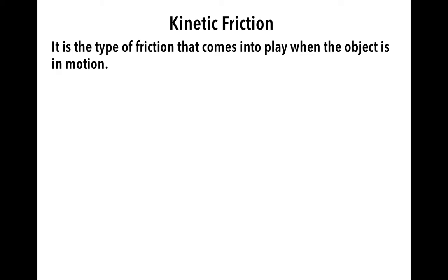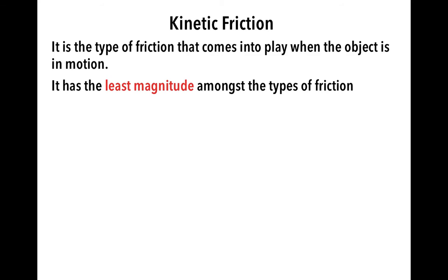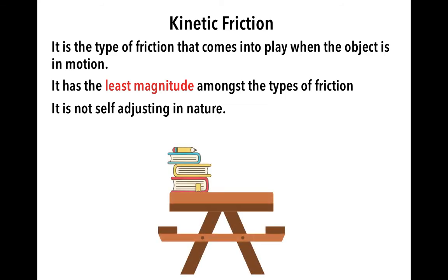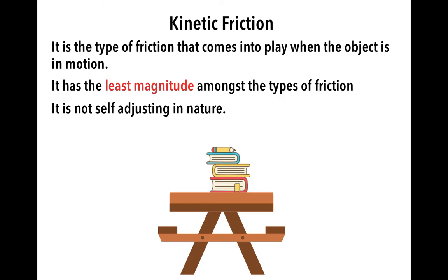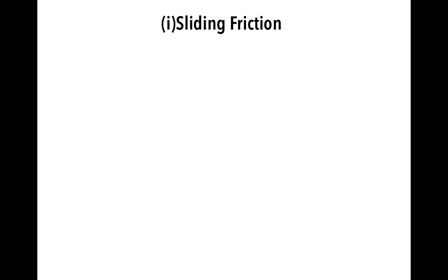Kinetic friction is the type of friction that comes into play when the object is in motion. It has the least magnitude amongst the types of friction. It is not self-adjusting in nature. In kinetic friction, the object does actually move and the amount of force applied is greater than limiting friction. It has two subtypes: sliding friction and rolling friction.